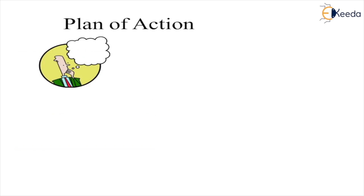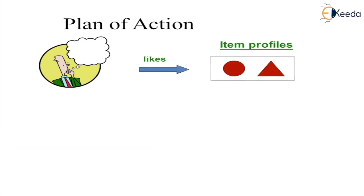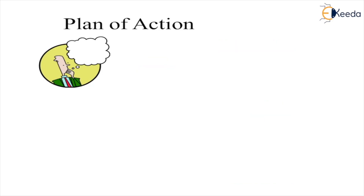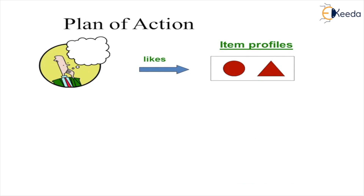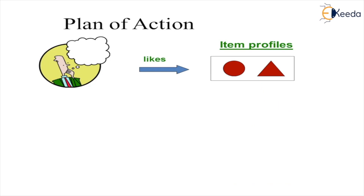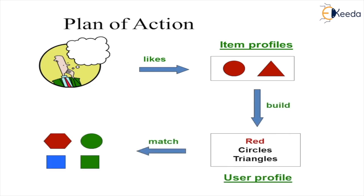What is the plan of action? The user likes some item profiles, and based on that we build a user profile. We then match it to a set of items, and matching products and items are recommended to the user.